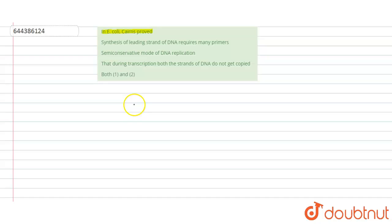So if we see Cairns - Cairns in 1963, Cairns was a British physicist and molecular biologist. In 1963, he published a paper regarding the experiment proving the semi-conservative mode of replication, semi-conservative mode of DNA replication in bacteria, particularly E. coli DNA replication in bacteria.